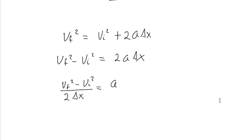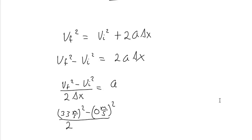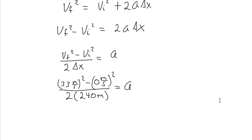Now it's time to plug in the values. Final velocity is 33 meters per second squared, minus 0 meters per second for initial velocity, all divided by 2 times displacement of 240 meters. This equals 2.3 meters per second squared, which is our acceleration. This is uniformly accelerated motion.